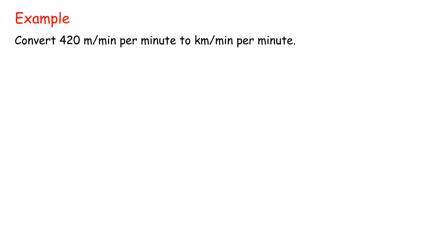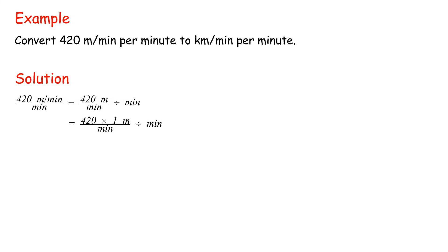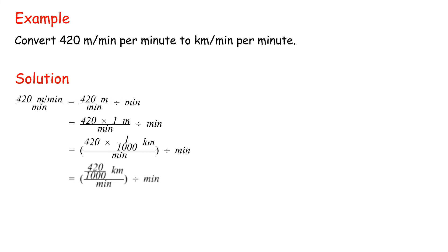Example: Convert 420 meters per minute per minute to km per minute squared. Solution: 420 meters per minute over minute equals 420 times 1 meter over minute divided by minute. Changing meter to kilometer: equals 420 times 1/1000 of a kilometer over minute divided by minute, equals 420 thousandths of a kilometer over minute divided by minute, equals 0.42 kilometers over minute squared.